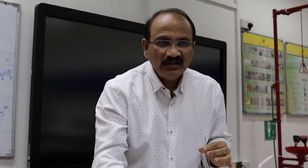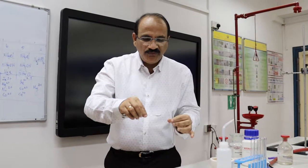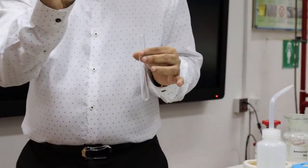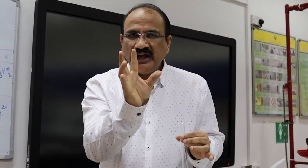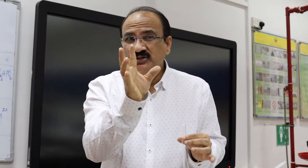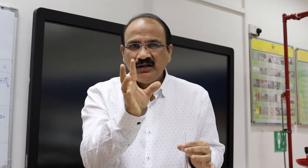Let us study the identification of Group 4. The Group 4 reagents are ammonium chloride, ammonium hydroxide, and hydrogen sulfide. The cations we are going to identify are Mn2+, Zn2+, Co2+, and Ni2+.